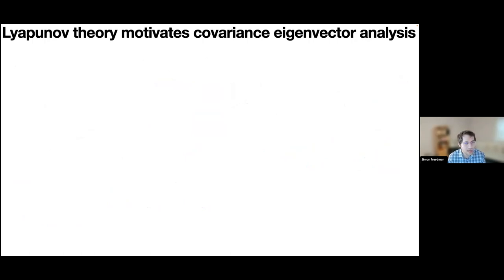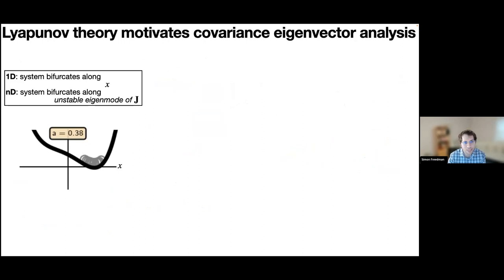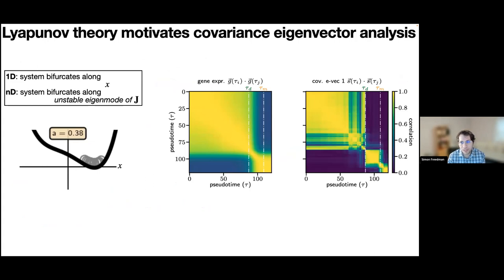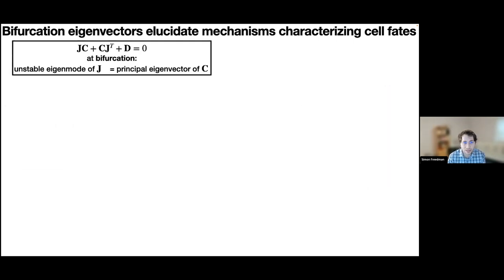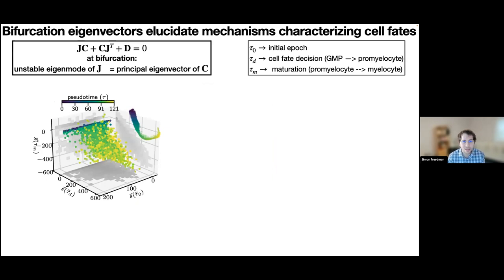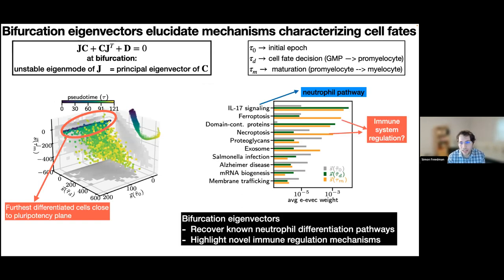I want to briefly touch on eigenvectors. The eigenvector is important because it's the direction along which the system bifurcates, and it's directly inferrable from the data. We found that the eigenvectors of the covariance are really good indicators of when things are changing across the trajectory — much more distinct in eigenvector space than in raw gene expression correlation space — and they recover our bifurcations at tau_D and tau_M very well. We can also re-visualize data in the space of these co-bifurcation eigenvectors to probe which signaling pathways are being highlighted.